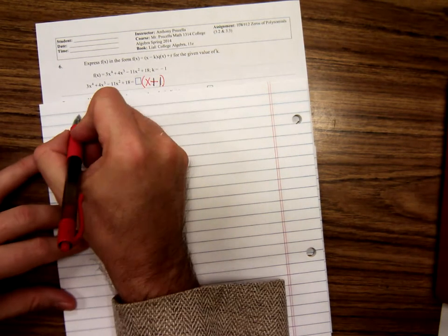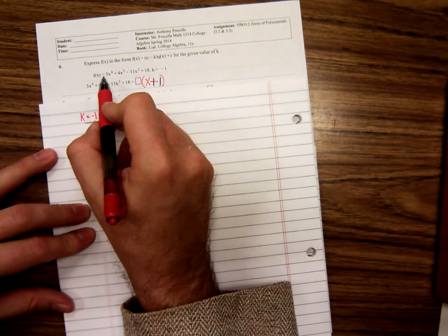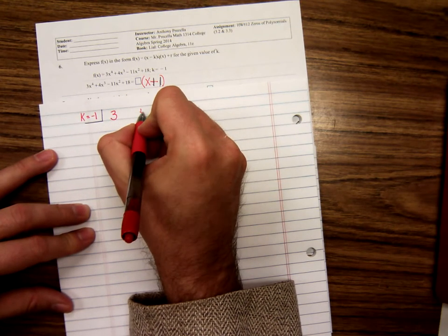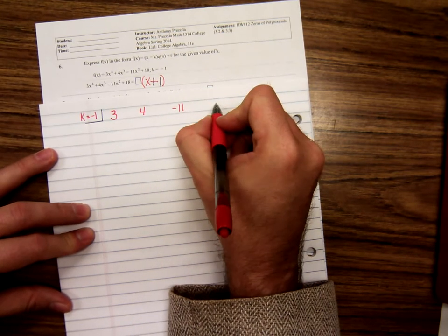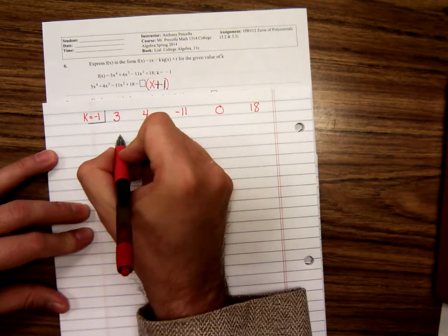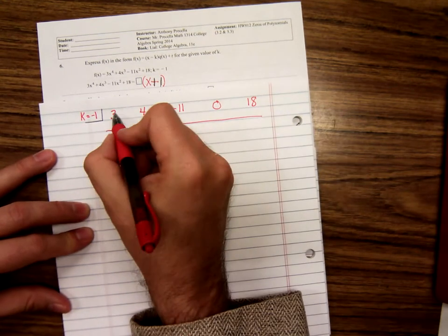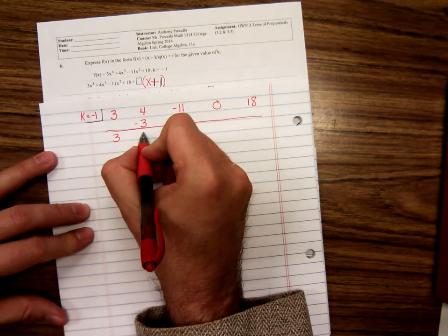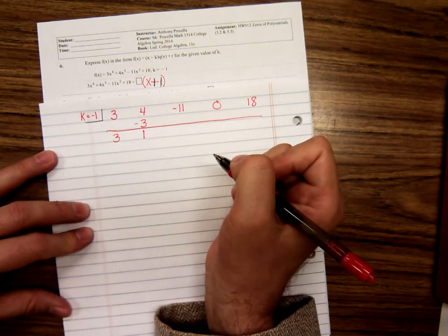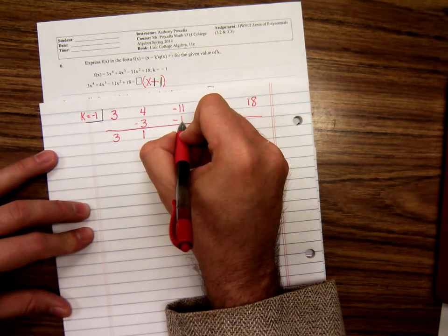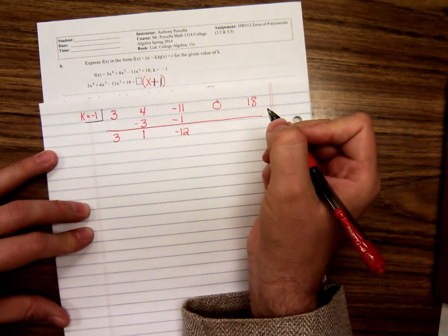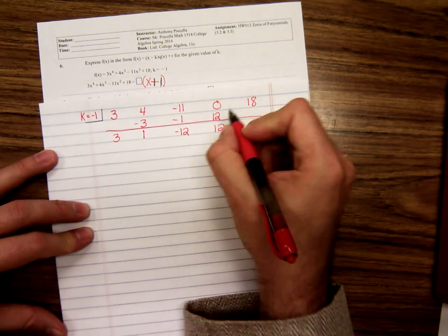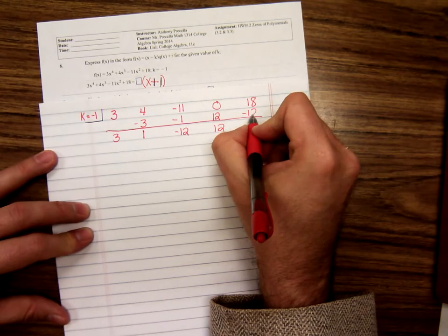So let's see, k is negative 1. 4 minus 3 is 1. 1 times negative 1 is negative 1. Negative 11 plus a negative 1 is negative 12. Negative 12 times negative 1 is 12. 0 plus 12 is 12. 12 times negative 1 is negative 12. Remainder 6.